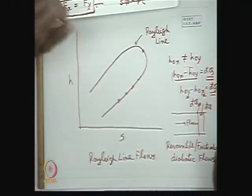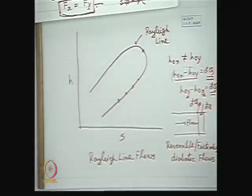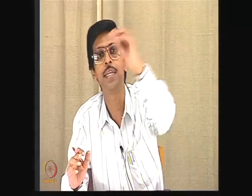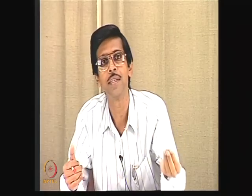Time is up for today. Next class we will be discussing Rayleigh line flows further. To summarize: the Rayleigh line is the locus of state points in the H-S plane that satisfy the frictionless equation of motion, the continuity equation, and the thermodynamic equation of state — representing flow without friction but with heat transfer, obeying steady-state conditions with the same mass flow rate. These are known as Rayleigh line flows — reversible diabatic flows where heat is either added or removed and the stagnation enthalpy changes accordingly. Thank you.